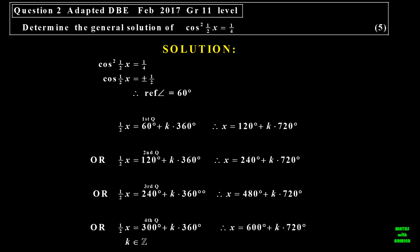Now let's look at the second question. We want to determine the general solution of cosine squared of half x equal to a quarter. So to get rid of the square, I find the square root, but you get plus or minus. And then I can get my reference angle using the half, and that gives me 60 degrees. Because it's positive in two quadrants and negative in two quadrants, it's actually all four quadrants that we require there.